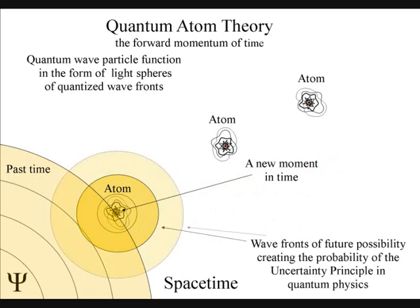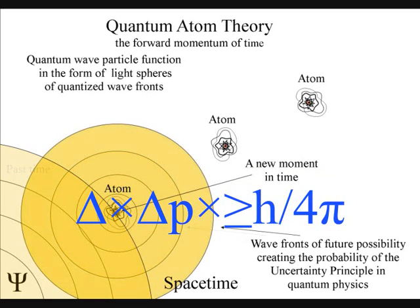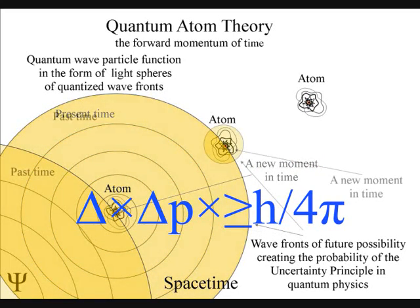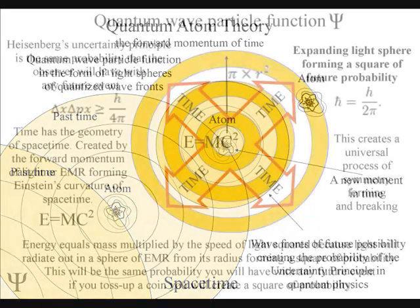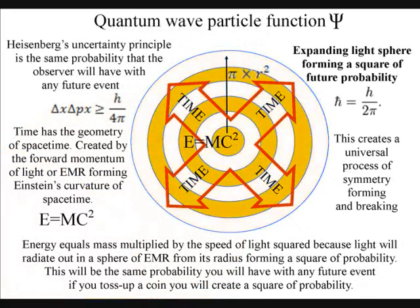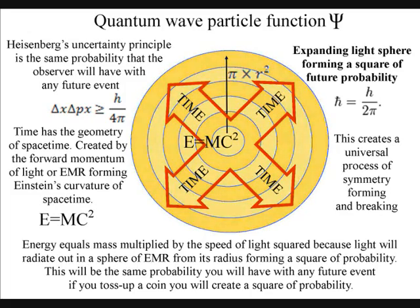This will be based on the equations and calculations that we already have and will fit in with the reality of our everyday life. In this theory, energy equals mass times the speed of light squared, because light will radiate out in spheres of electromagnetic waves from its radius, forming a square of future probability.